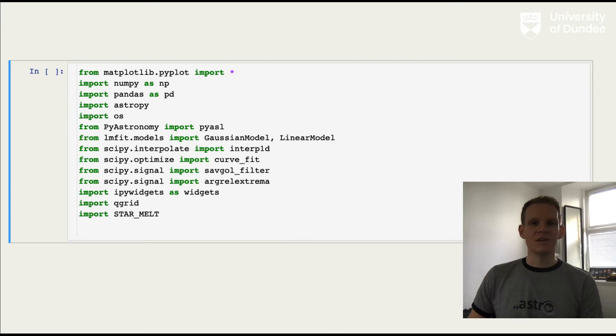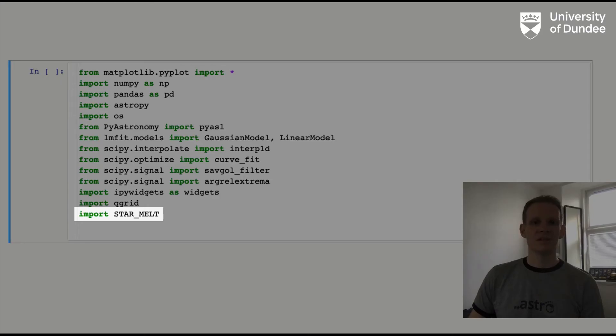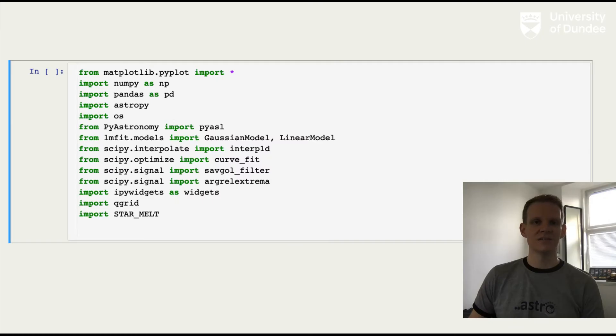StarMelt will be publicly available at the end of my postdoc project at Dundee. There's a package that you can download from PIP or GitHub, and you'll be able to import it along with the other documented packages that StarMelt utilizes. StarMelt contains modules and functions that can be used scripted or in IPython, but to take advantage of some of the great interactive features such as widgets and QGrid, we've been developing the main flow using Jupyter notebooks.